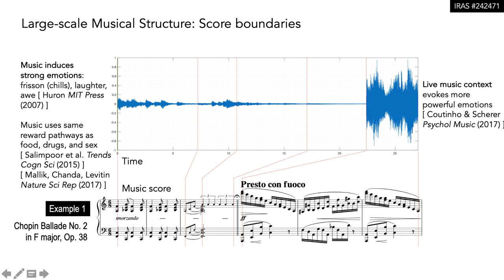So why use music to understand cardiac response to emotions? Music induces strong emotions. We use live music to accentuate its effect. Strong emotions are due to violations and fulfillments of expectations, which happen at points of change and transition. Composers often mark structurally important points of change in the music score.